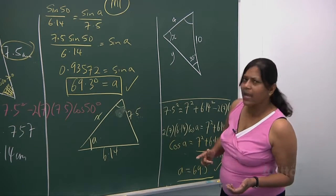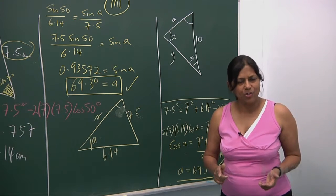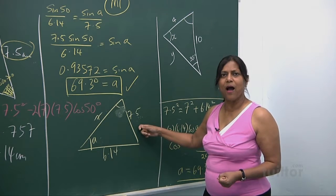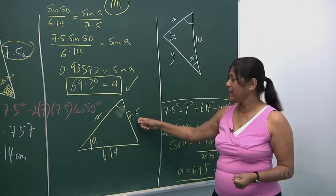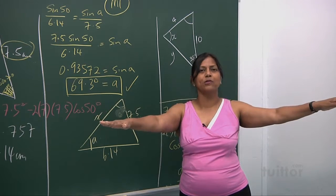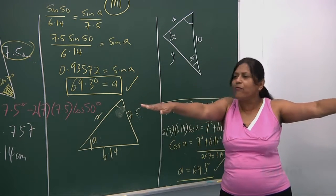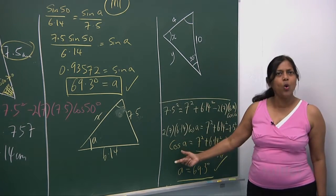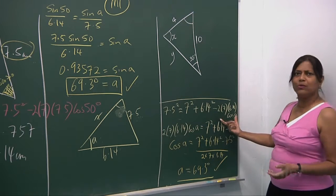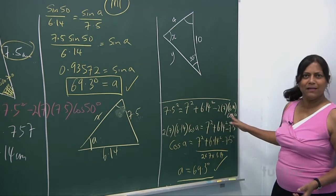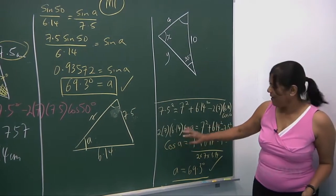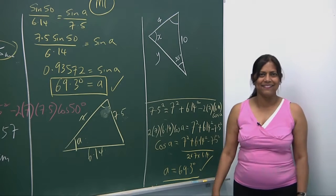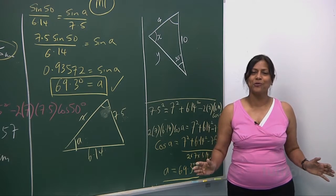The key trick is: who do you make the leader? If you want to find angle A, make the opposite side — 7.5 — the leader. So 7.5 squared equals 7 squared plus 6.14 squared minus two times seven times 6.14 times cos A. Then rearrange, carry the whole family over, and put the values into the calculator to find the angle.